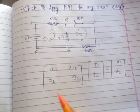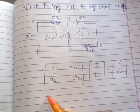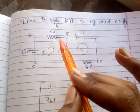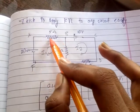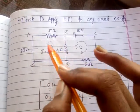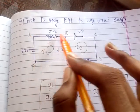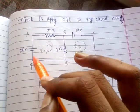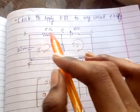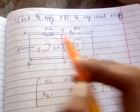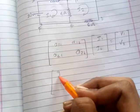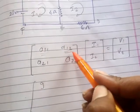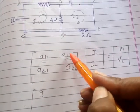For a11, you need to add all the resistances in loop I1. The loop I1 goes A→B→E→F→A, and here we have resistances 5 and 4, so 5 plus 4 equals 9.